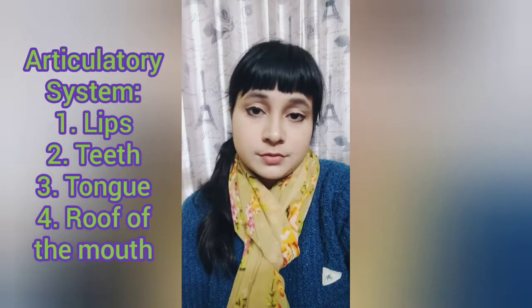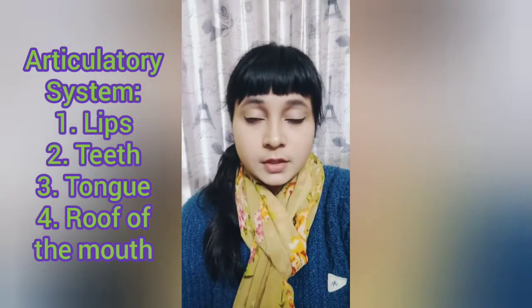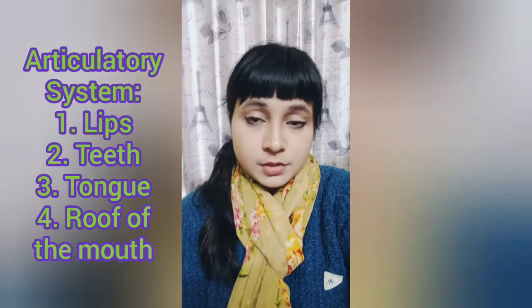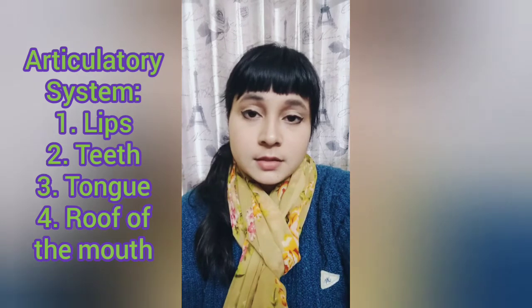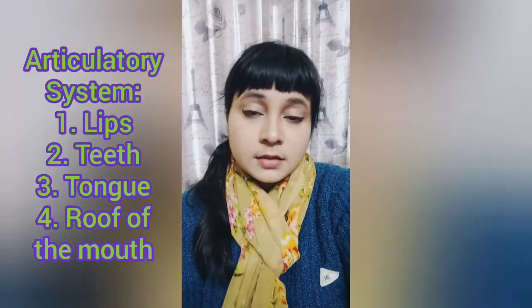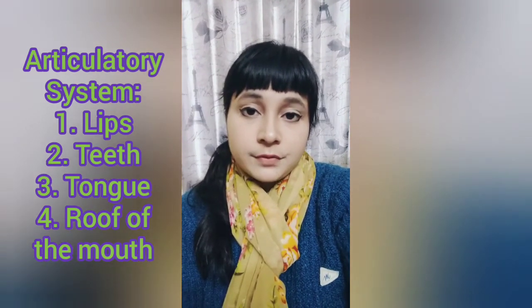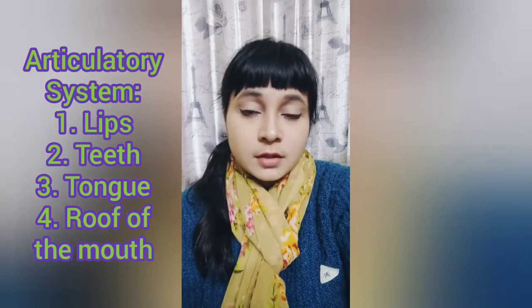The next important system is the articulatory system. It consists of the organs of speech, and they are the lips, the teeth, the tongue, and the roof of the mouth. The roof of the mouth and the tongue have different parts as well, and these parts are involved in the production of different speech sounds.